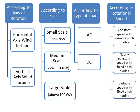According to size, they are classified into three types. First is small scale wind turbine, used up to 2 kilowatt. Second is medium scale wind turbine, used to generate 2 kilowatt to 100 kilowatt of energy. Third is large scale wind turbine, which generates above 100 kilowatt.